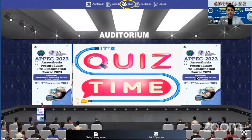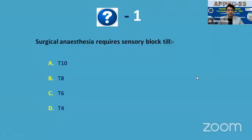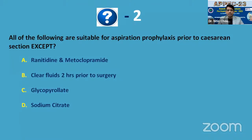We'll have the first quiz for the day. Question one: surgical anesthesia requires surgical sensory block till — option A: T10 dermatomal level, option B: T8, option C: T6, option D: T4. What is the adequate dermatomal level for surgical anesthesia, in the context of LSCS? Question two: all of the following are suitable for aspiration prophylaxis prior to caesarean section except — option A: ranitidine and metoclopramide, option B: clear fluids two hours prior to surgery, option C: glycopyrrolate, option D: sodium citrate. Don't forget it's an 'except' question — which is not suitable?